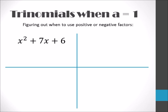Since both of our b and c values are positive, both of our factors will be positive. In this case, we have 6 and 1 because we know 6 times 1 will give you 6 and 6 plus 1 will give you 7. Both of these will be positive since both b and c are positive.